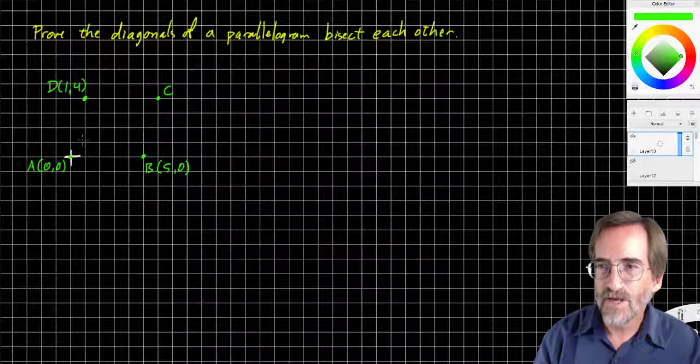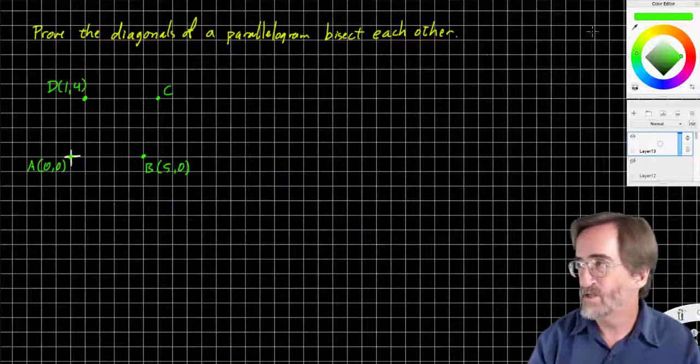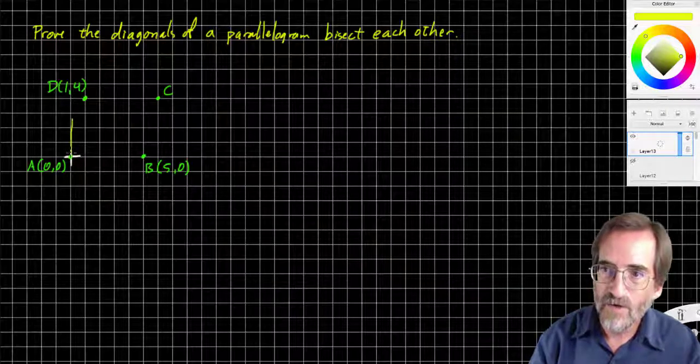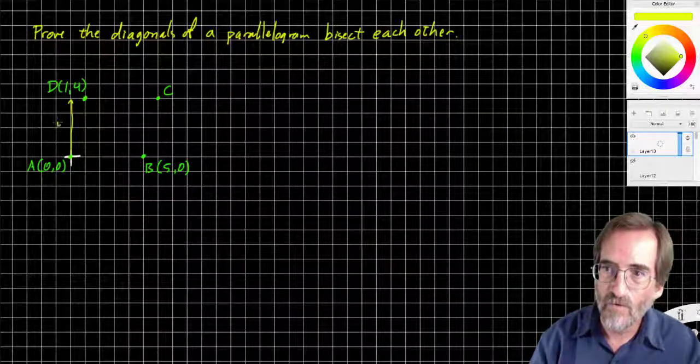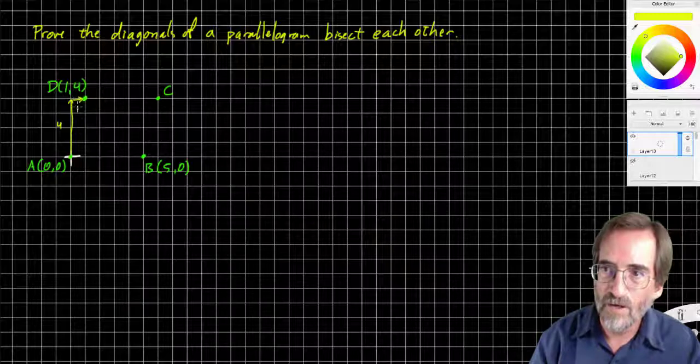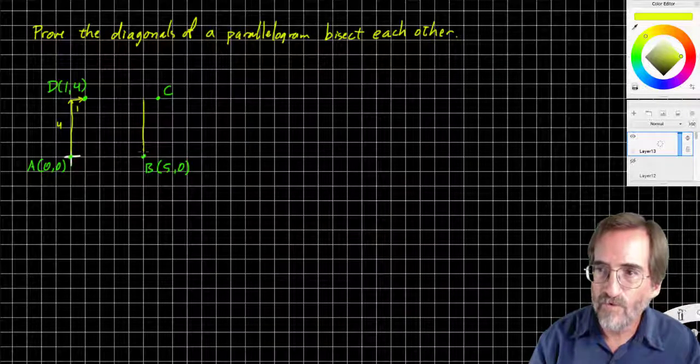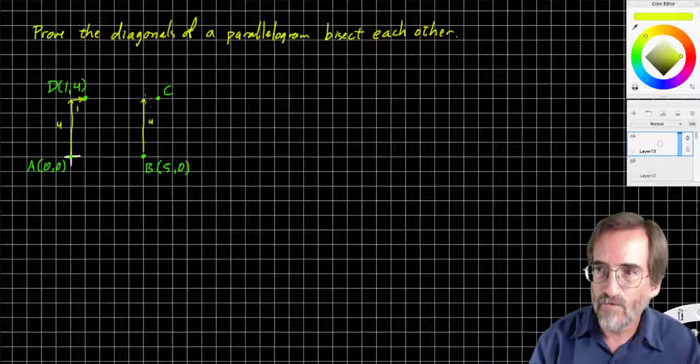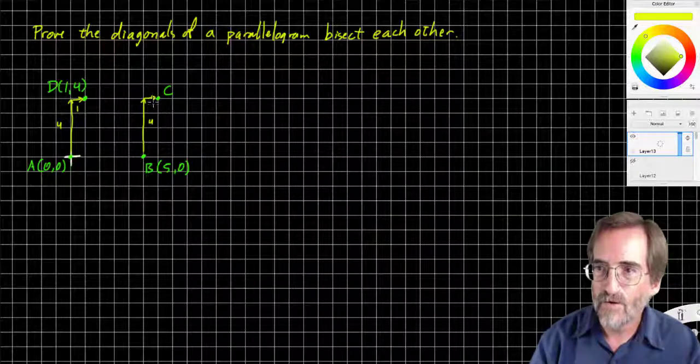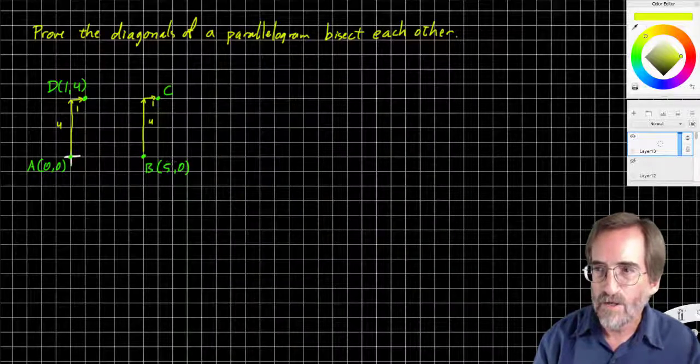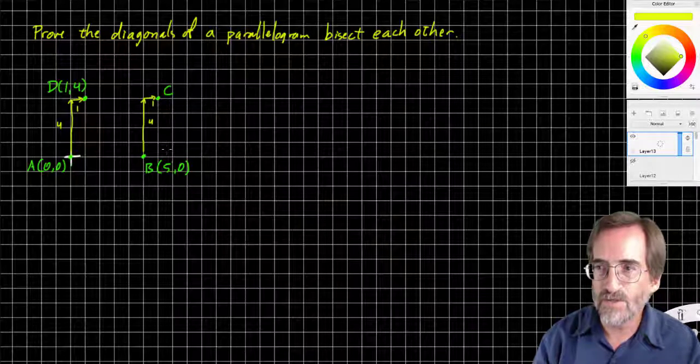C has to have the same slope as A, D. Right? So if I go up four and over one, then I need to go up four from B and over one. So the X coordinate gets increased by one. So this is five, and then to the right of five by one hop, five plus one.